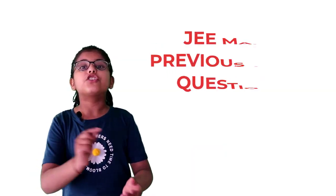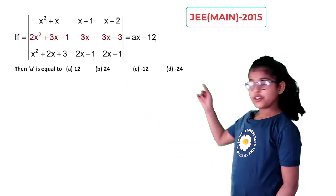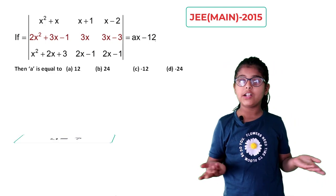Here I will prove this with the help of a JEE MAIN previous question. My first question is, if this determinant is equal to Ax - 12, then what is the value of A?